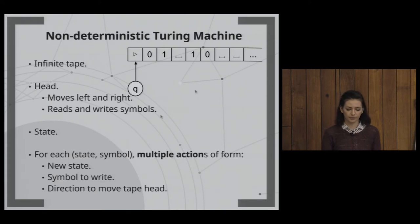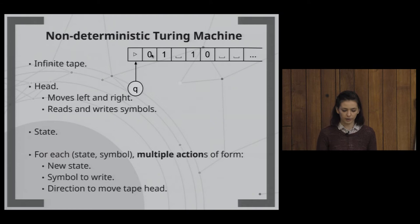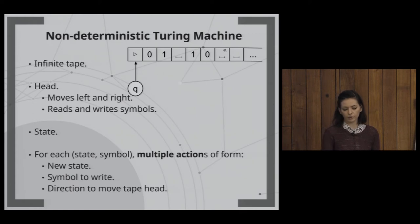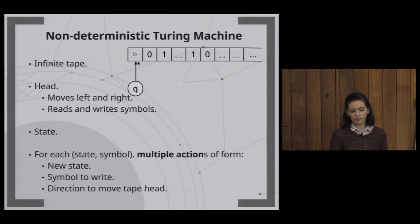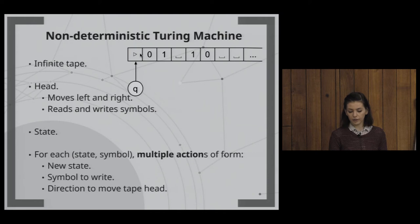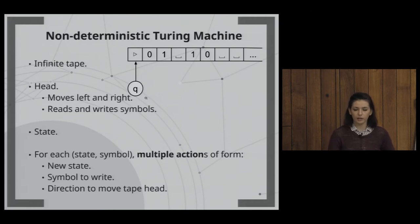Consider a tape with a special start symbol on the left, and cells containing symbols like 0, 1, and blank. The tape is infinite but has finitely many non-blank symbols. A tape head moves left and right, initially at the start position, reading and writing symbols. We also have a state register. For each pair of state and symbol read under the tape head, we can have multiple possible actions — each a tuple of new state, symbol to write, and direction to move. This non-determinism means multiple actions are possible.